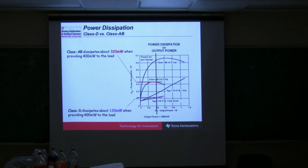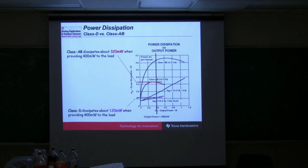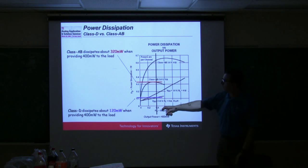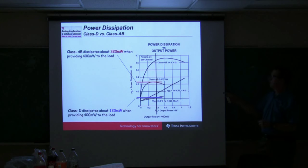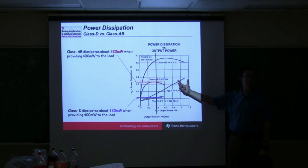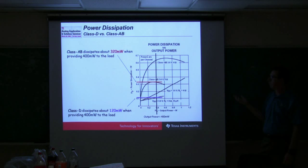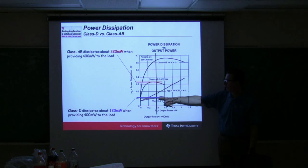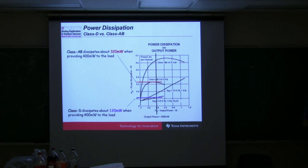The idea behind the Class D amplifier — the reason we're interested in it — is it's a lot more efficient than a Class A amplifier. In a battery-operated application or where you don't have a large heat sink, the Class AB amplifier starts to have problems. We're comparing two points on the curves here. The Class AB delivering about 0.4 watts into the speakers is dissipating almost 0.4 watts as heat — just a little over 50% efficient. Compared to the Class D amplifier, for the same 0.4 watts output, it's about 120 milliwatts — much more efficient.